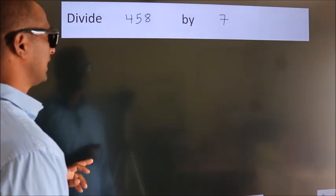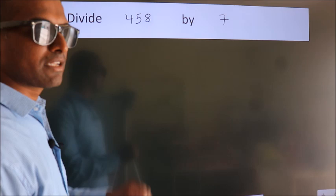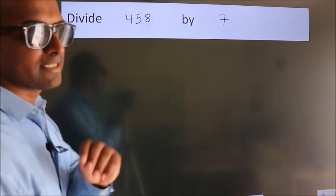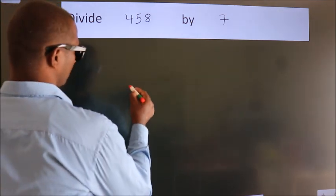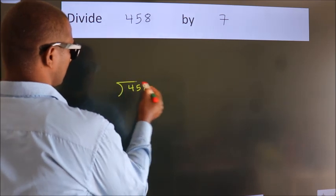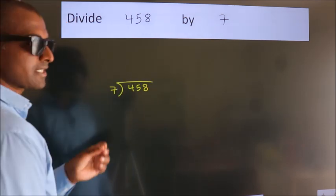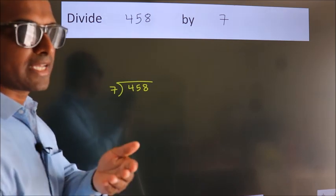Divide 458 by 7. To do this division, we should frame it in this way. 458 here, 7 here. This is your step 1. Next, here we have 4, here 7.